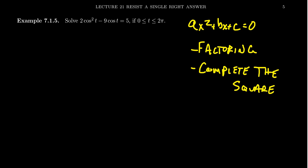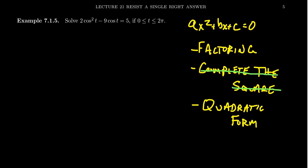Frankly speaking, students never like to complete the square. It's a really good technique, but let's be honest, no one ever likes to do it. We're just going to move on to the third option, which is the quadratic formula. The quadratic formula solves any quadratic equation — you don't have to do any guessing like you do with factoring. It's mechanical. The arithmetic can get more complicated, but it's always an option. The quadratic formula is derived by completing the square in the most general setting, so every time you use it, you really are completing the square — you just don't have to remember the algorithm.